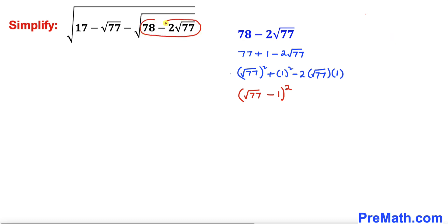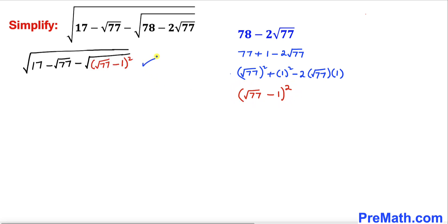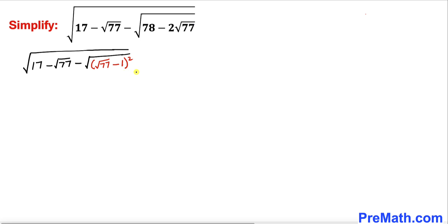So this radicand has been simplified. The square and square root undo each other, and we simply end up with the square root of 17 minus square root of 77 minus, inside the parentheses, square root of 77 minus 1.